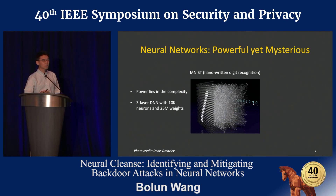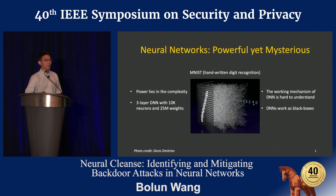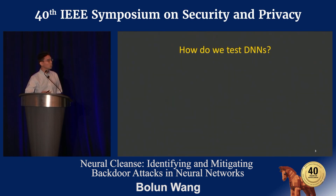The way this model works is quite confusing and mysterious to me, because it doesn't really match how I think I would solve the task in my brain. Most of the time, we just treat these models as black boxes. So then a very natural follow-up question is: how do we test these complicated black box models? How do we make sure they work as expected?